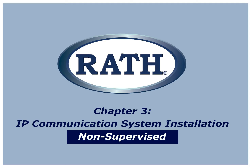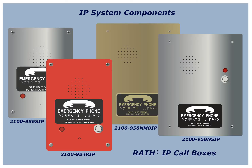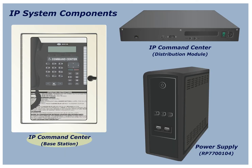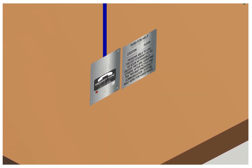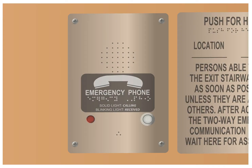Chapter 3: Non-Supervised System Installations. The components for this system include 2100-series IP call boxes, an IP command center base station with distribution module, power supply RP-7700104, router, network switch with POE ports, and CAT 5E communication cable at minimum. This is the wiring demonstration for a non-supervised IP system.